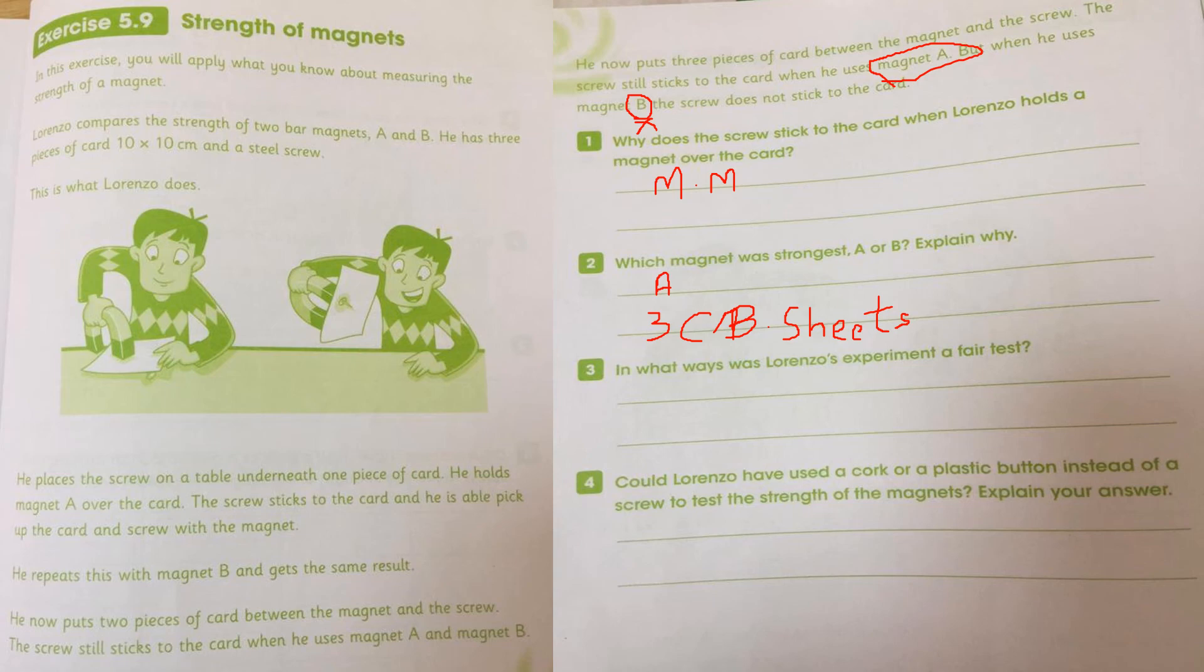In which way was Lorenzo's experiment a fair test? Because he is taking too many readings. So that's why we said it's a good thing that he is taking too many readings and he is putting all the things same. Like magnet have same screw, same cardboard sheets. So that's why he is putting all the things same. That's why we said it's a fair test.